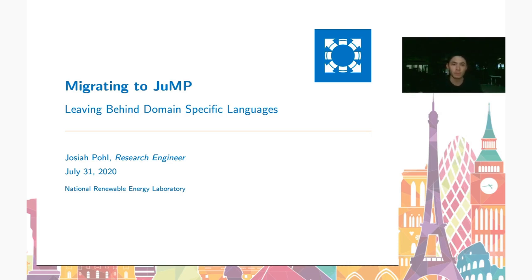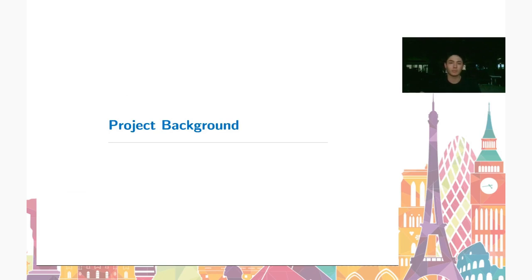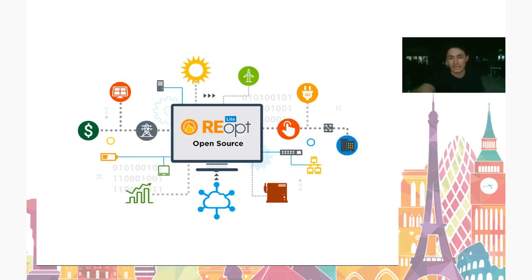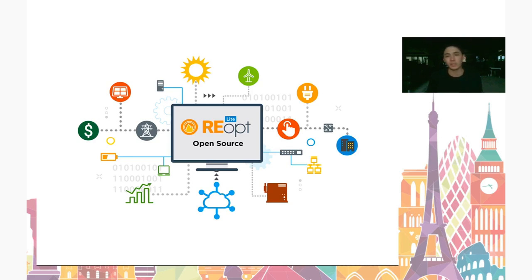I'm going to start off with a little bit of background on the project we used all this in — RE-OPT Lite, our open source version. RE-OPT Lite is a techno-economic optimization tool that takes resource data for energy generation assets, as well as utility bills and utility bill structure, and optimizes the sizing and dispatch of each of those assets to meet your renewable energy needs or just to lower your overall costs.